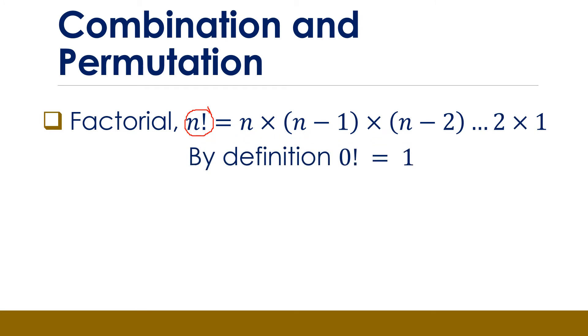If repetition is not allowed, then we have to use a different way of counting. In that case, we use the factorial. The factorial of a number N is the product of all possible positive whole numbers less or equal to N, which is read as N factorial, N with an exclamation mark. Now, by definition, 0 factorial is equal to 1.